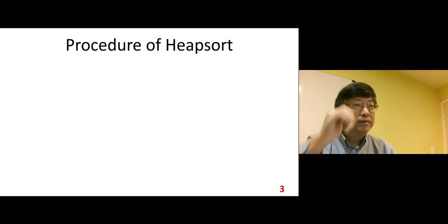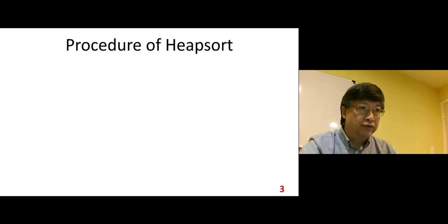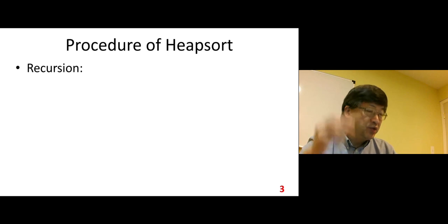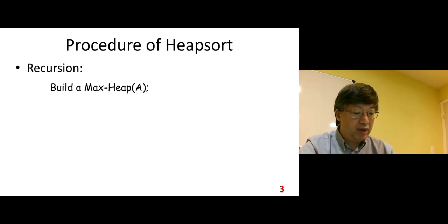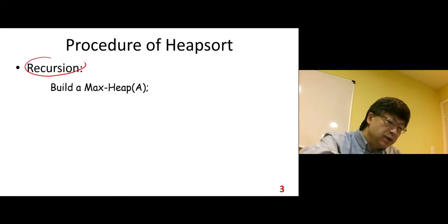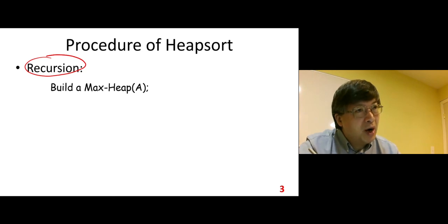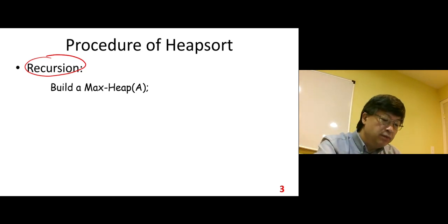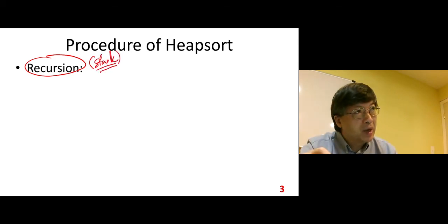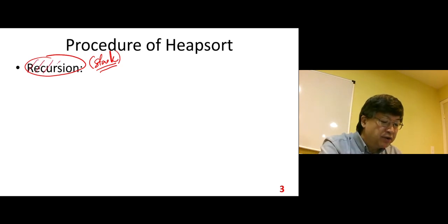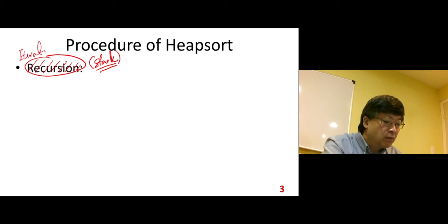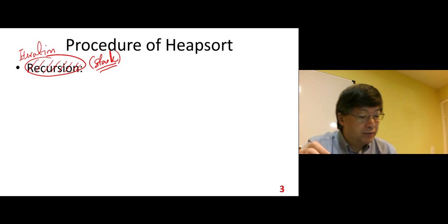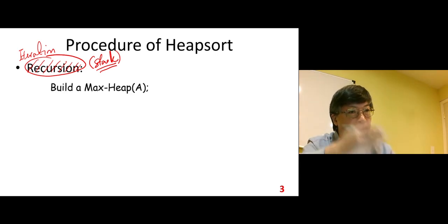So we can write a pseudocode for the whole heap sort procedure. We use iteration — not recursion. Because with recursion there is a stack problem: it uses too much memory. So here we use iteration — a for loop — to avoid that deep stack usage problem.